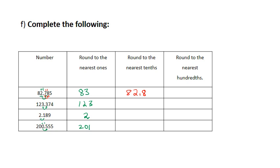The zeros to the right are useless. The same thing for the second one: it becomes 123.4, 2.2, and 200.6. Now the hundredths — I underline the hundredths and look just before. It's 82.79; the zeros are useless. The same thing for the second one: it's 37, 2.19, and 200.56.